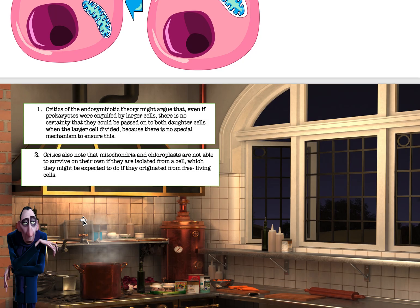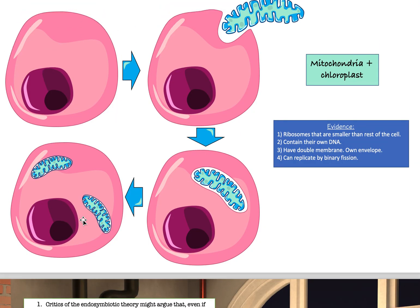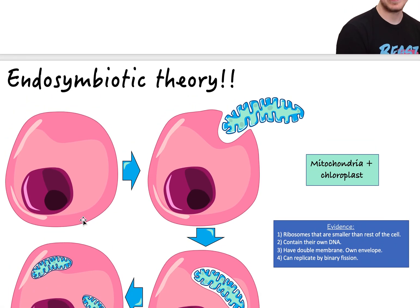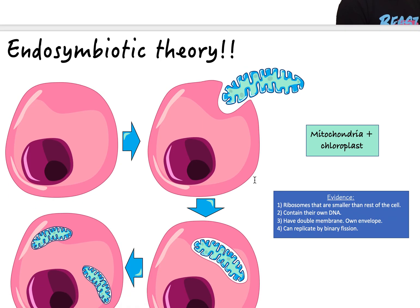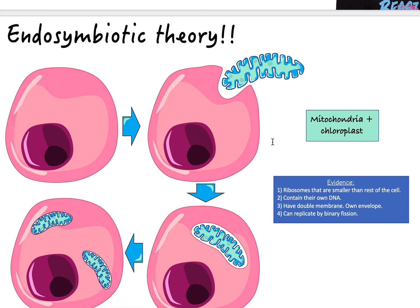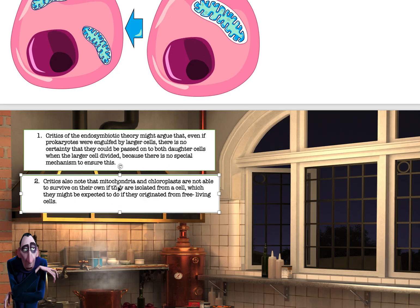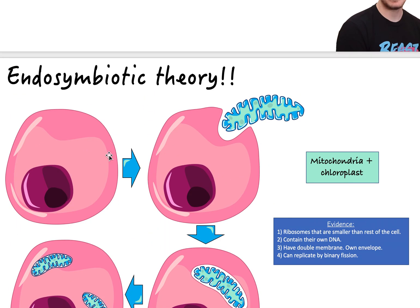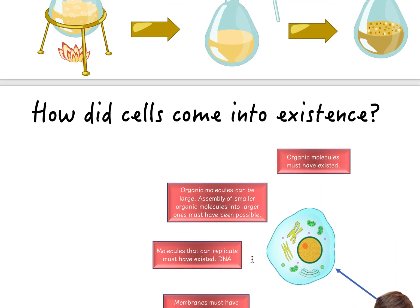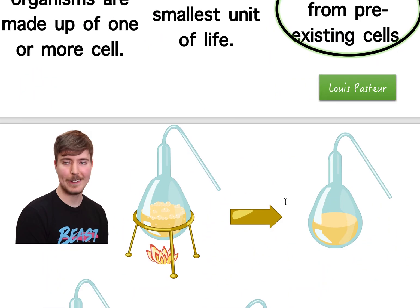That's everything you need to know about subtopic 1.5, the origin of cells. Overall, emphasize the endosymbiotic theory — know what it is and how to explain it — and also know Louis Pasteur's experiment well, as both are important and testable. The critics section is worth being aware of but isn't the main focus.